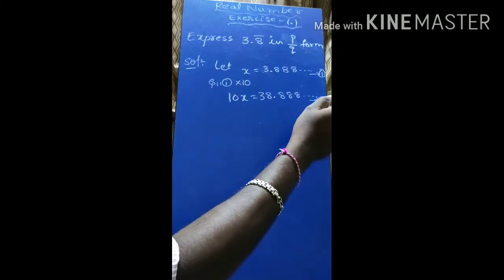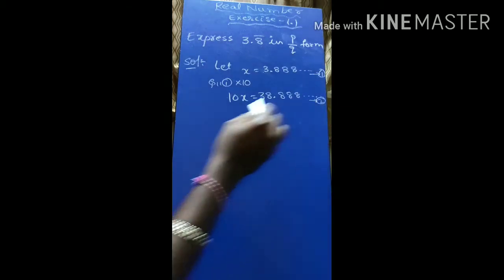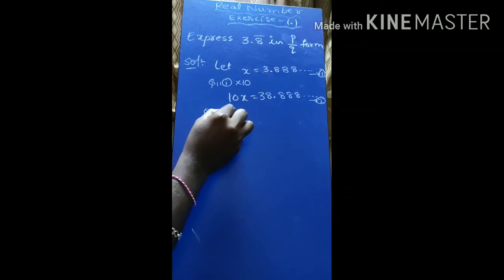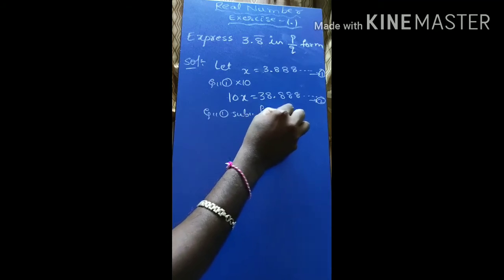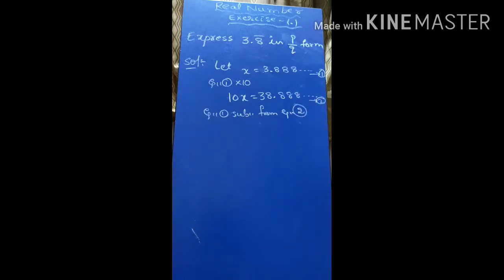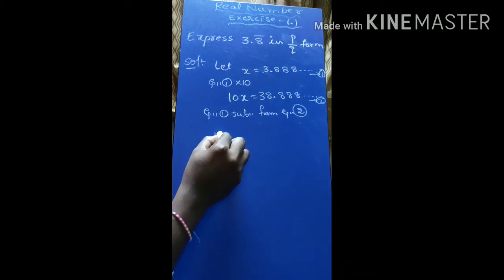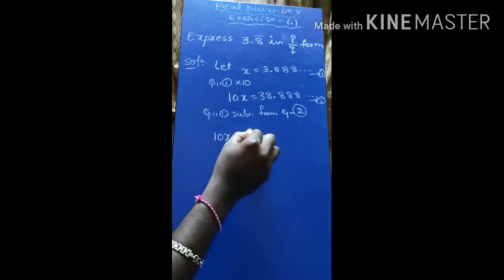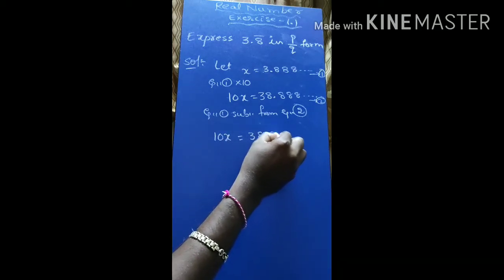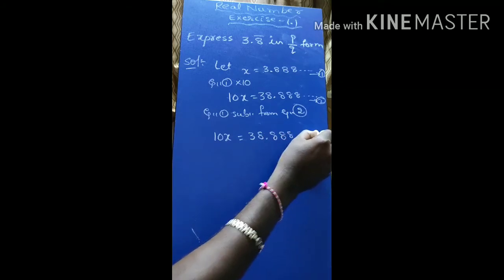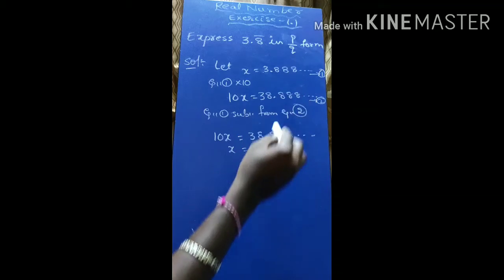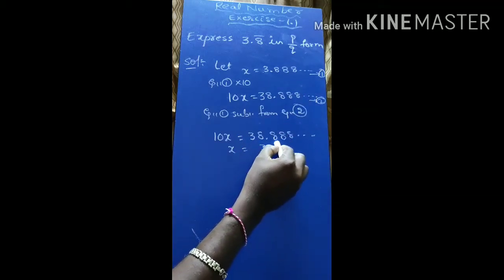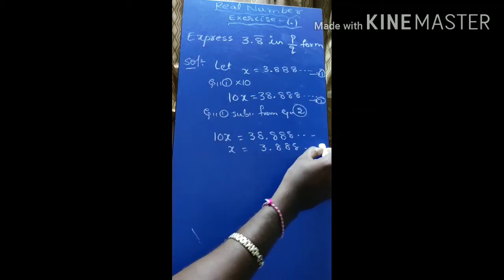Now subtract equation 1 from equation 2. When we subtract, 10x is equal to 38.888... and x is equal to 3.888...